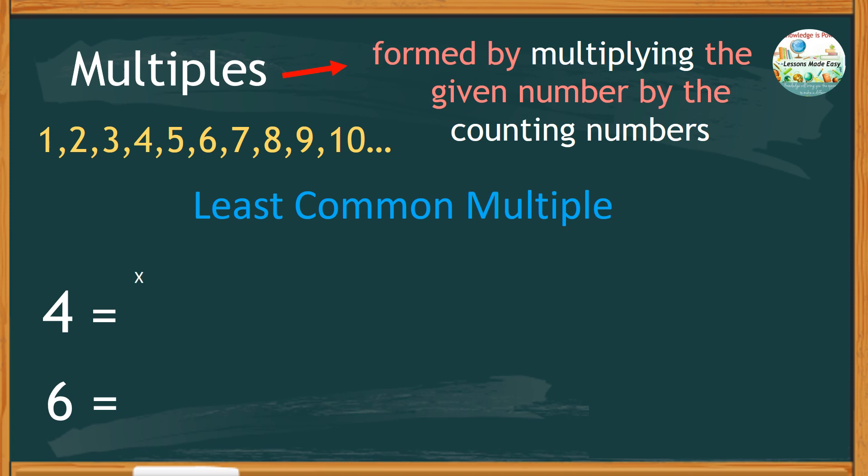It means that finding the multiples of four is just like looking at the four times table. Starting with, four times one equals four, four times two equals eight, four times three equals twelve, four times four equals sixteen, four times five equals twenty, four times six equals twenty-four, four times seven equals twenty-eight, and four times eight equals thirty-two, four times nine is thirty-six, and so on.